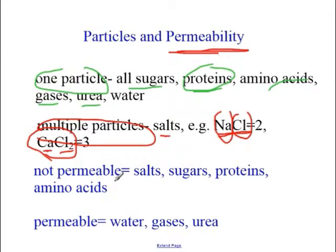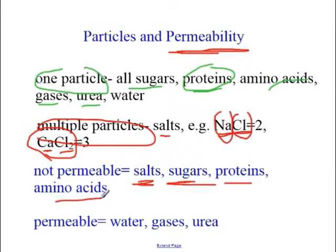What about permeability? When we say a semi-permeable membrane, who can get across and who cannot? Salts like sodium chloride cannot go through a biological membrane. Neither can big stuff like sugars—they can get through a living membrane with facilitated transport, but passively they can't. Proteins can't and amino acids can't. Who can go through without any help down a concentration gradient? Water—obviously, that's why we have osmosis—gases, and urea. Urea is going to be super important, and that's the key to understanding how the kidney works.